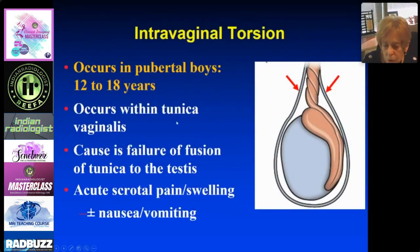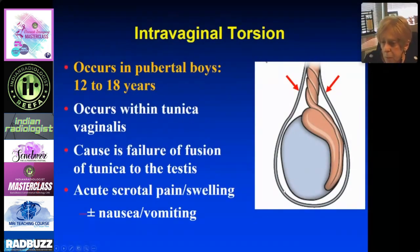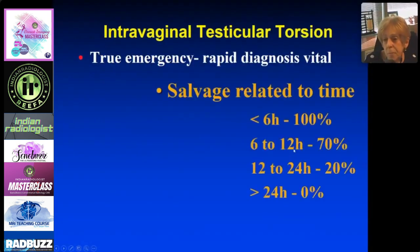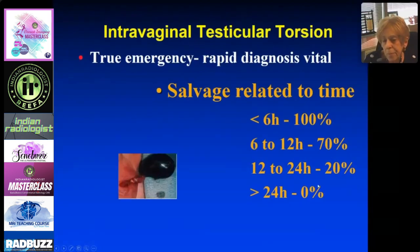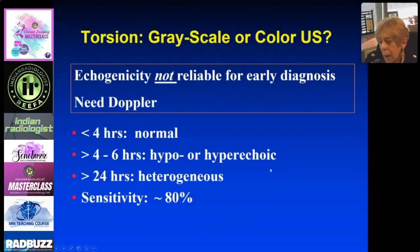Intravaginal torsion is the one you're familiar with — it occurs in pubertal boys aged 12 to 18. It's called intravaginal because it occurs within the tunica, which covers the testis and part of the cord. The cause is failure of fusion of the tunica to the testis, allowing the testis to twist. Patients present with acute scrotal pain and swelling, possibly nausea and vomiting. Rapid diagnosis is critical: salvage rate is 100% within 6 hours, 70% at 6–12 hours, 20% at 12–24 hours, and essentially zero after 24 hours. Echogenicity is not reliable alone for early diagnosis.